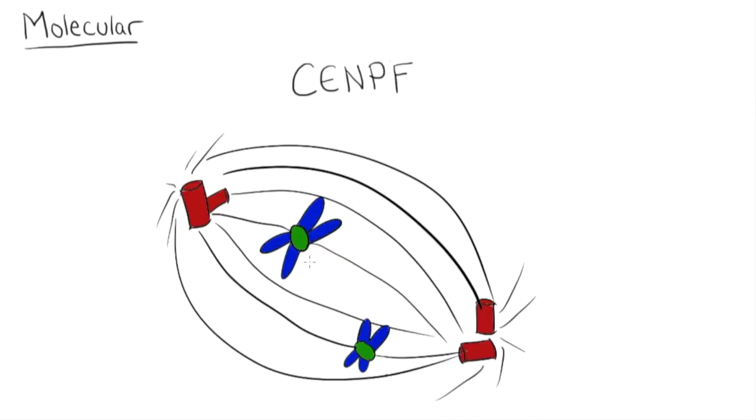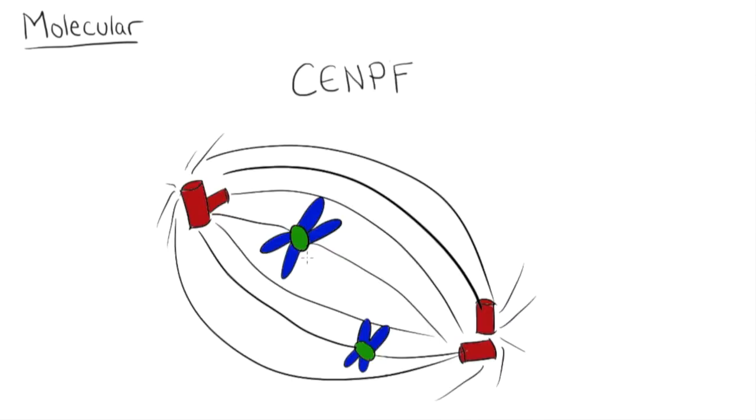As its name suggests, this protein is present at the centromere of chromosomes, the part that allows chromosome segregation to occur. Specifically, CENPF seems to be important for kinetochore microtubule attachment at the centromere, and thus has a role in the cell cycle.